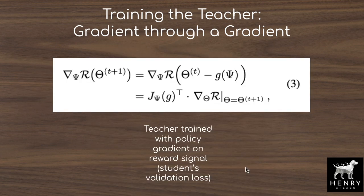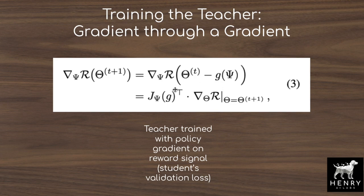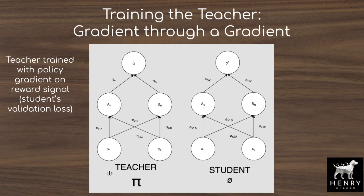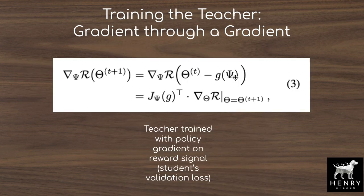The equation from the paper explains how to take a gradient through a gradient to update teacher parameters phi, with respect to student parameters theta_t+1 evaluated on the validation set. Since theta_t+1 is itself produced by a gradient update from theta_t, finding how much each phi parameter contributes to the validation loss requires differentiating through that gradient — a complex but key idea in the MetaPseudoLabels meta-learning algorithm.